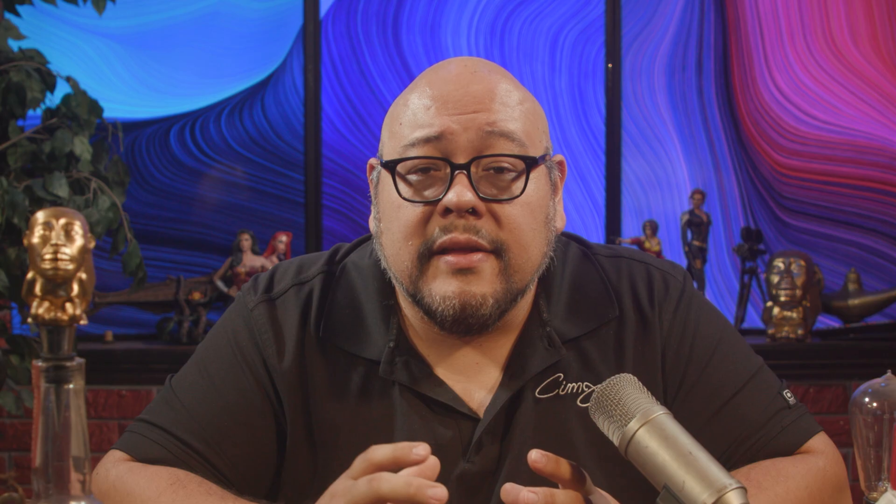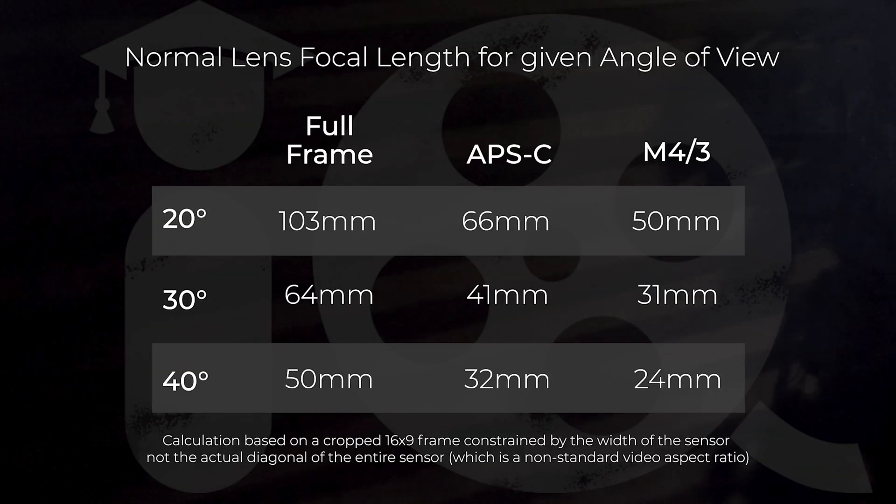Let's translate that into lenses. With a viewing distance that gives us 20 degrees angle of view, a normal lens would be about 2.5 times the diagonal of the sensor. For SMPTE's 30 degrees, it's about 1.6 times the diagonal of the sensor. And for THX's 40 degrees, it would be 1.2 times the diagonal of the sensor. The closer you sit and the bigger the screen, the smaller the focal length the normal lens needs to be. Here's a quick chart of some common sensor sizes and what a normal lens focal length would be under these three viewing angle standards.